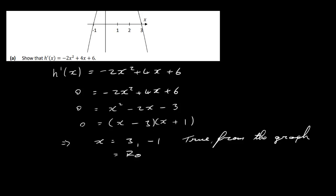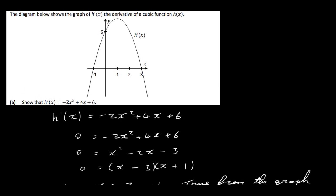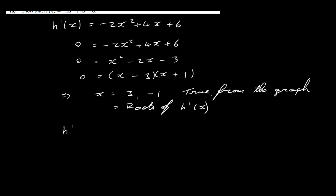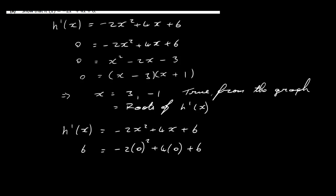These are the roots of h prime x. The other thing we need to check is where it cuts the y-axis. We can see the function cuts the y-axis at (0, 6). If we put in 0 for x, we get minus 2 times 0 squared plus 4 times 0 plus 6, which gives us 6. So the y-intercept is (0, 6), which is correct. That's all we need to do in that part of the question.